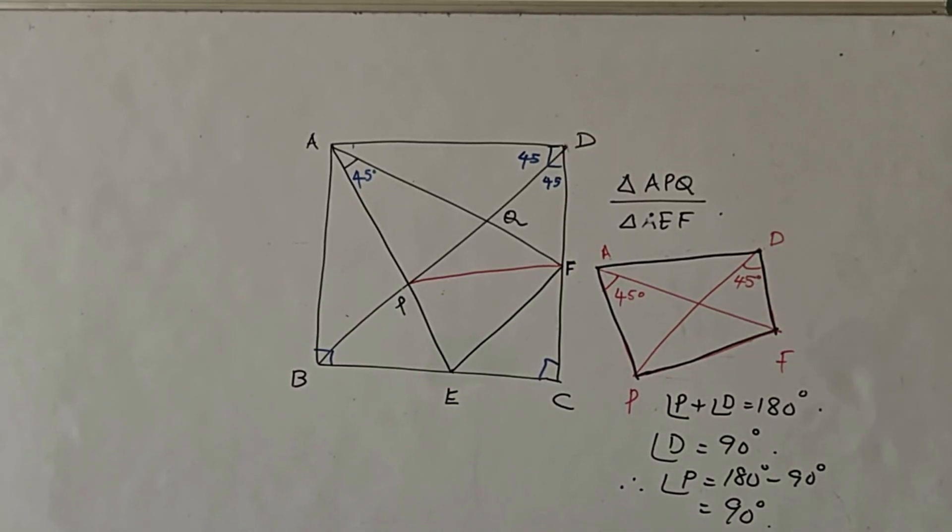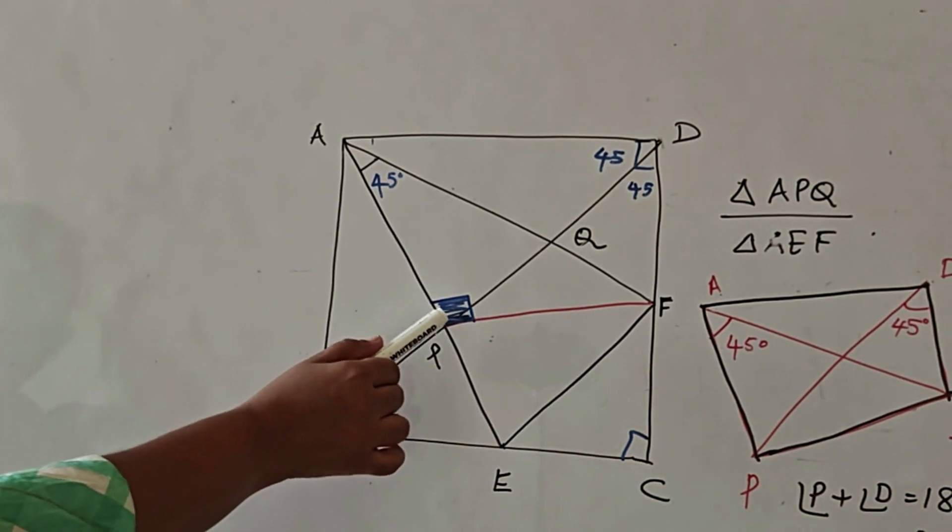When I am joining A, P, F and D you get a cyclic quadrilateral. In a cyclic quadrilateral, the opposite angles are supplementary, or when you add the opposite angles you get 180 degrees. So angle P plus angle D is 180, but we already know angle D is 90 degrees. So you get angle P also as 90 degrees.